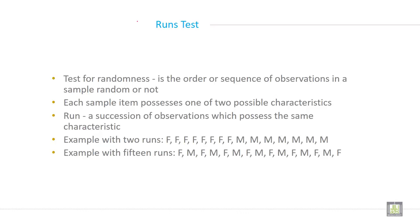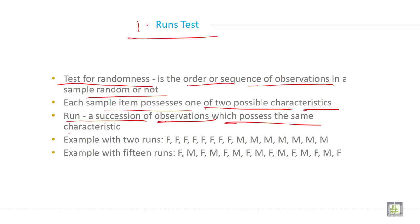The first test is the runs test, a test for randomness. Is the order or sequence of observations in a sample random or not? Each sample item possesses one of two possible characteristics. A run is a succession of observations which possess the same characteristic.